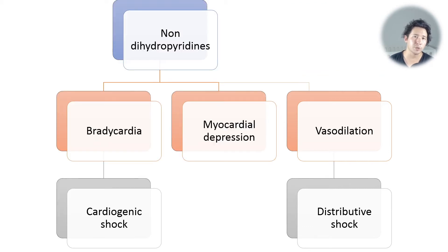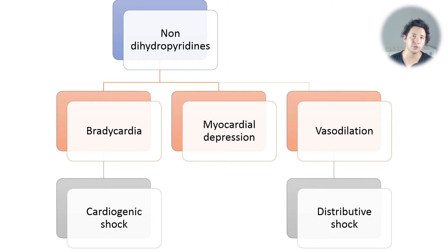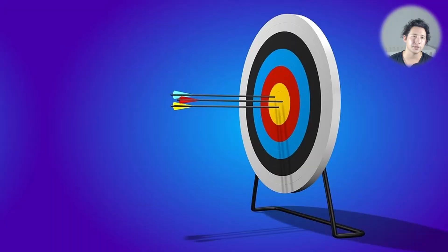When you take a more centrally acting non-dihydropyridine calcium channel blocker, you still get vasodilation from the peripheral effects of calcium channel blockade, but you also get the more dangerous central effects: bradycardia and myocardial depression. This causes a form of cardiogenic shock on top of your distributive shock, resulting in more profound hypotension and impaired perfusion.